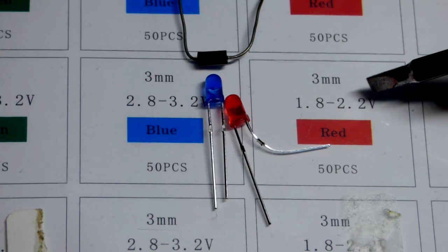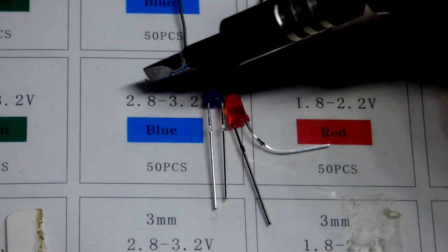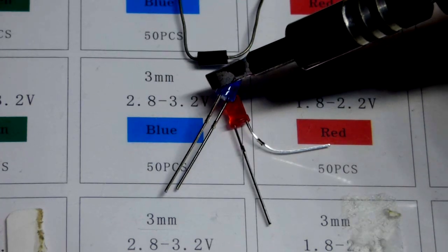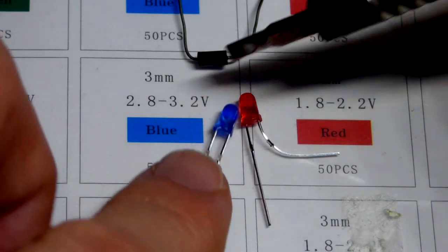But in any case the red LED is going to start lighting up somewhere about 1.8 volts. As current goes up it can build up about 2.2 volts across it. The blue LED needs more voltage.